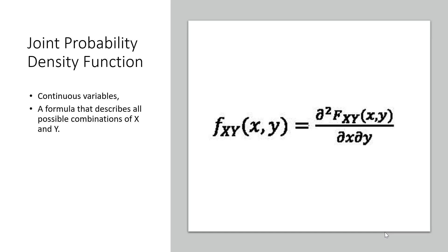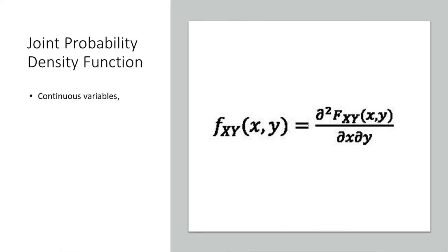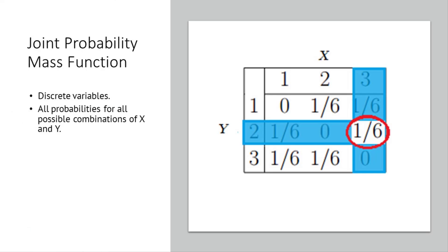But just to clarify, there are two types of densities. You have the joint PDF, which is for continuous variables, and then you have the joint PMF, and those are for your discrete variables.